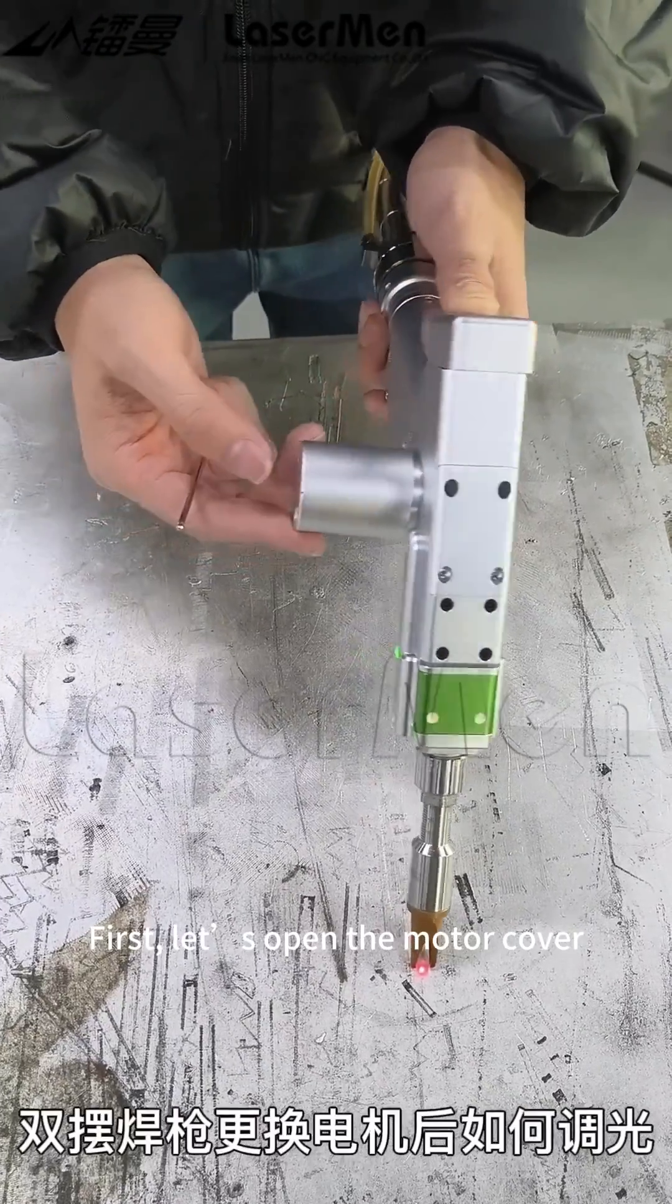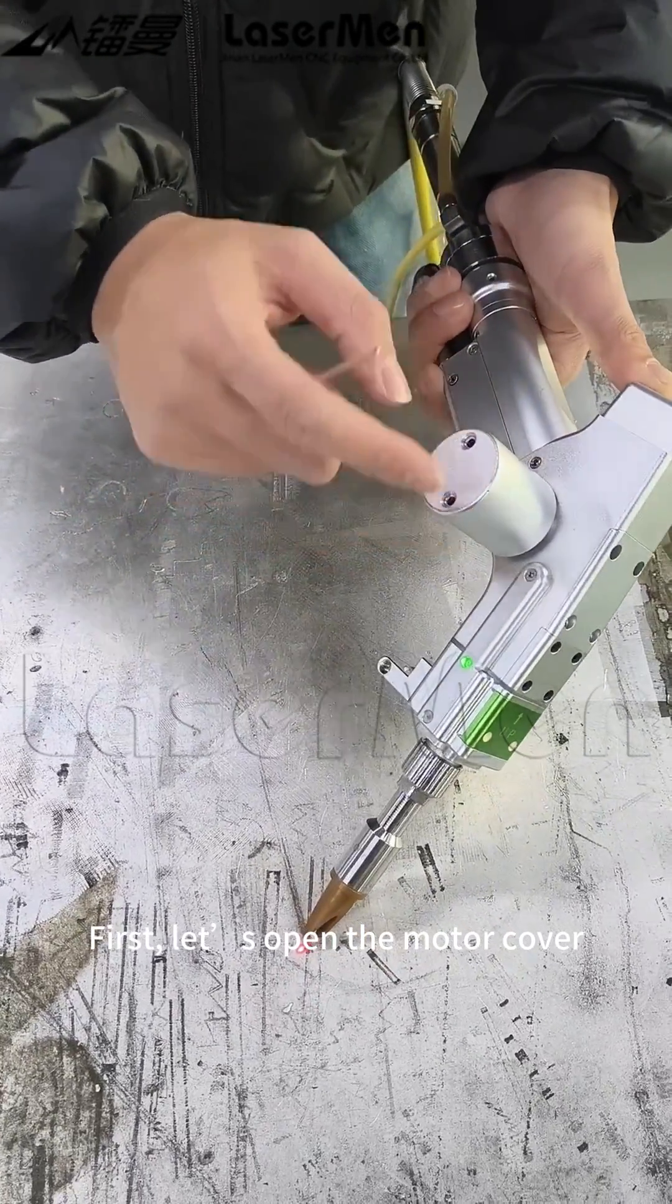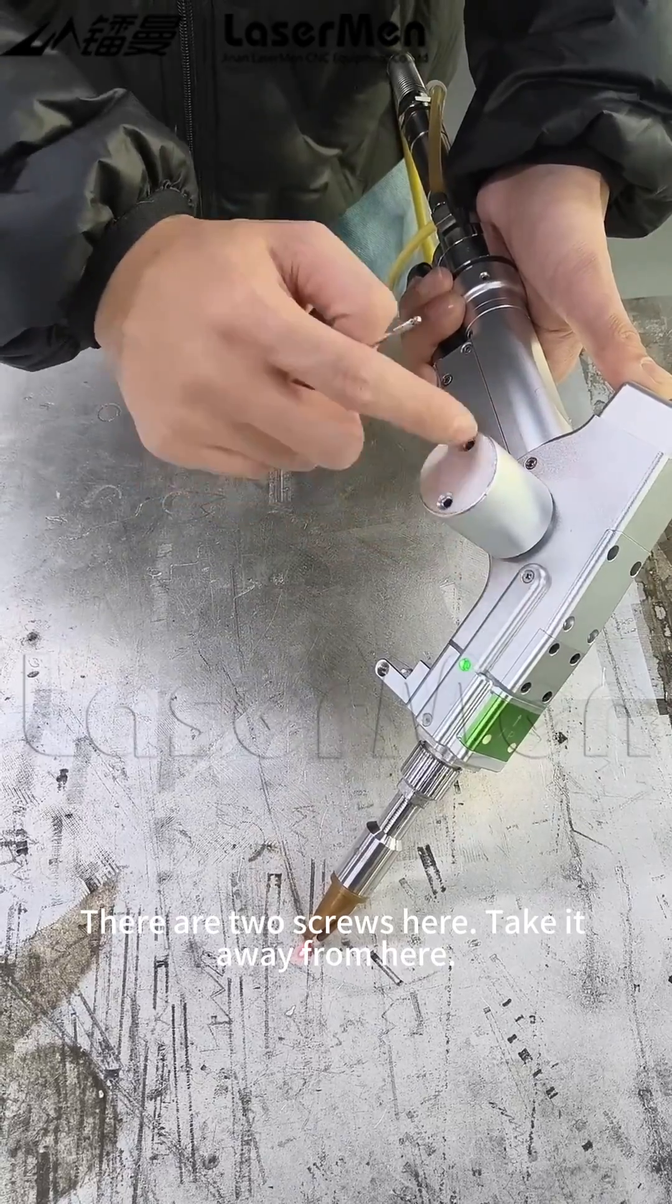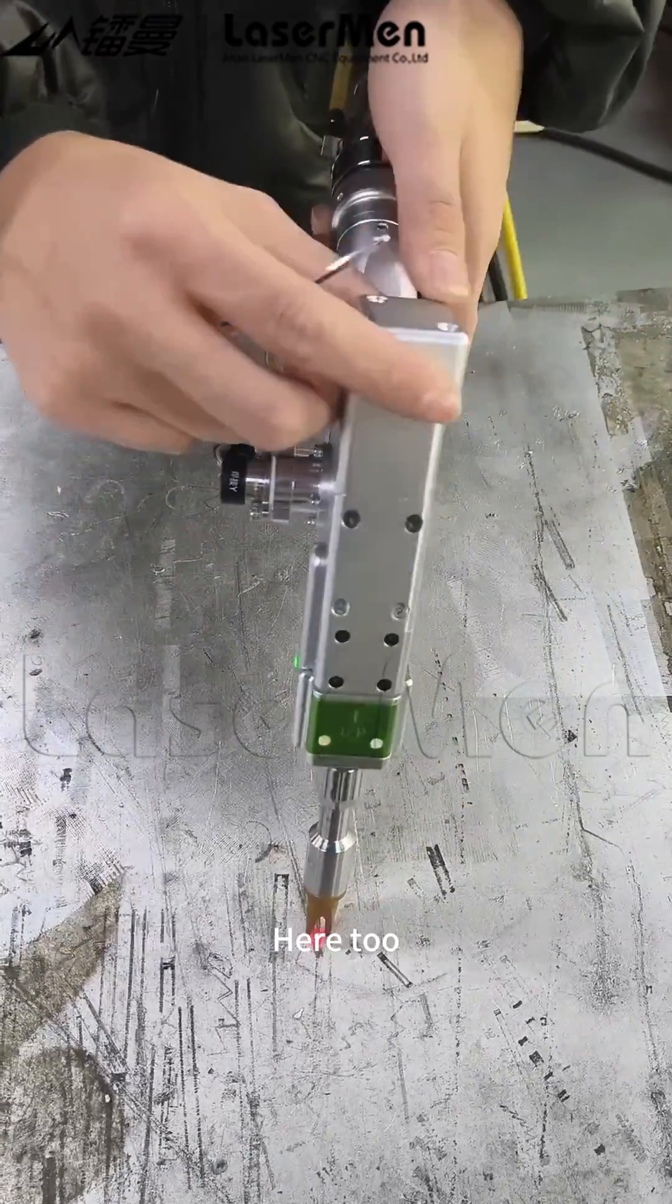Double wobble welding dimming. First, let us open the motor cover. There are two screws here, take it away from here. Here too.